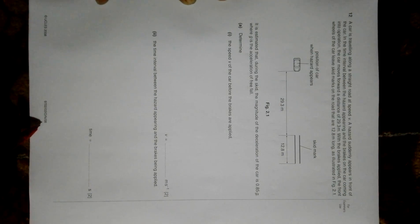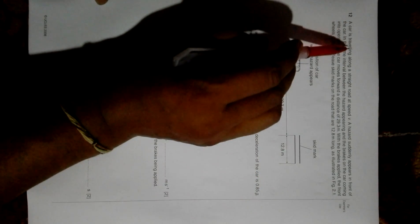The question is from 2008 October November Paper 2, question number 2. It says that a car is traveling along a straight line at speed V.